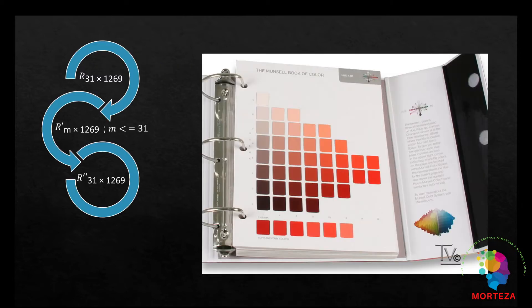The data that we're going to use has a dimension of 31 by 1269 as it's been shown right up here. And we are planning to compress the data along the first dimension, the 31. So we compress it to m and as you can see m is smaller or equal to 31, so we're going to compress it along the first dimension.